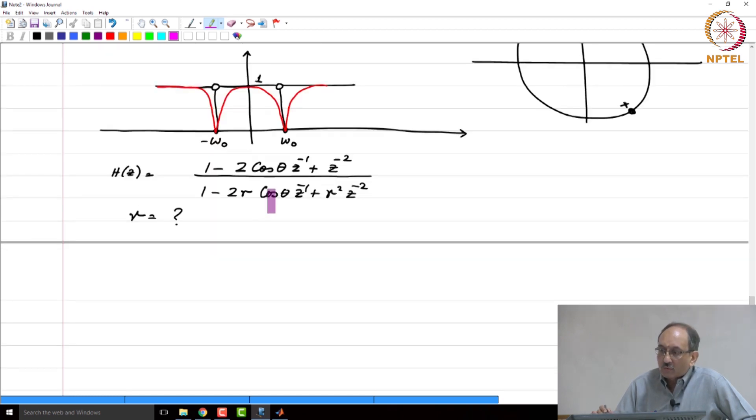So, you will write this as y of n equals all these terms x of n minus 2 cos theta x of n minus 1 plus x of n minus 2 and then you will have plus 2 r cos theta y of n minus 1 minus y of n minus 2. So, this is a difference equation you will implement in practice. So, it does not depend on how quickly or how slowly the impulse response decays. So, that is not an issue.